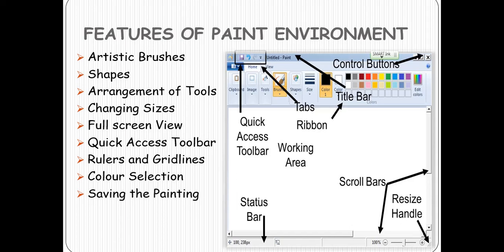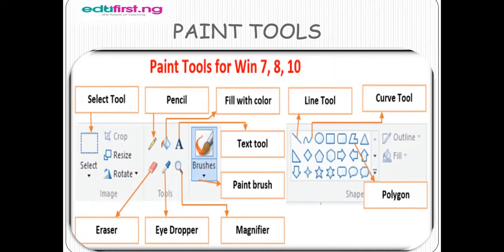Now let's look at the paint tools. What are the various paint tools we have in the paint environment? We have different paint tools in different Windows versions — Windows 7, Windows 8, and Windows 10. Most of them are common across each version. These include: the select tools, the pencil, fill with color, the line tools, the curve tools, the paintbrushes, the eraser — which you can use to erase or clean if you made a mistake — and also the eyedropper, and lastly the magnifier.